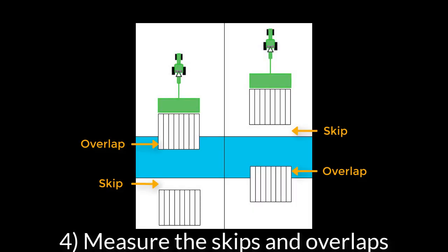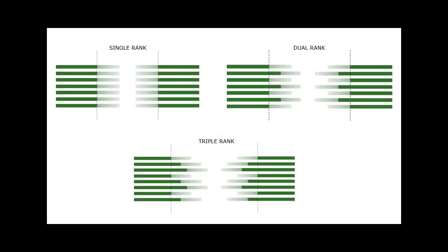Measure the distance of skips or overlaps entering the scratch path, as well as the distance of skips or overlaps exiting the scratch path coverage. Make sure you are looking at the correct rank on dual and triple rank machines.